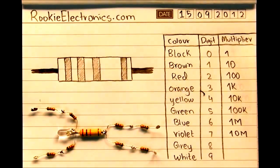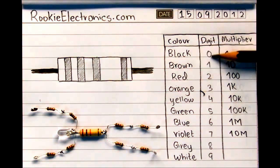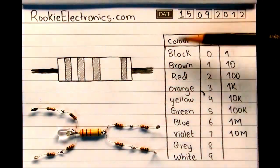These colored bands have some digits assigned like this. Black is 0, brown is 1, red is 2, and so on.